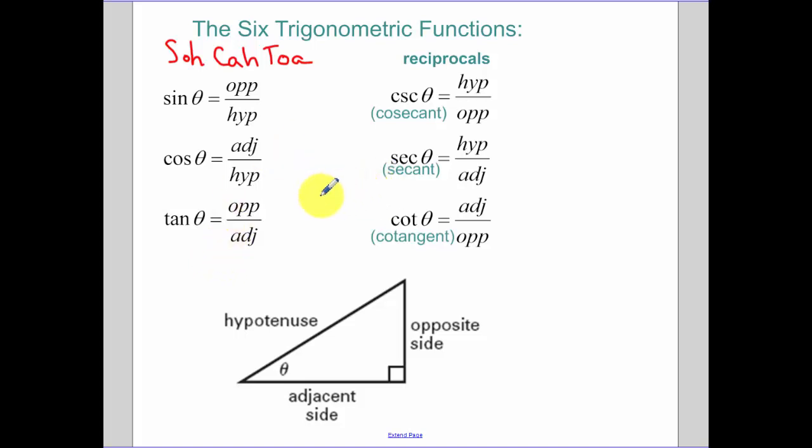Now the reciprocal functions. What I usually do is I usually make a chart. Sine opposite of sine is cosecant because it's just the reciprocal: hypotenuse over opposite. Cosine adjacent over hypotenuse, the reciprocal is secant. And for tangent, its reciprocal is cotangent.